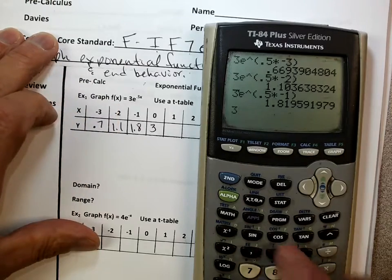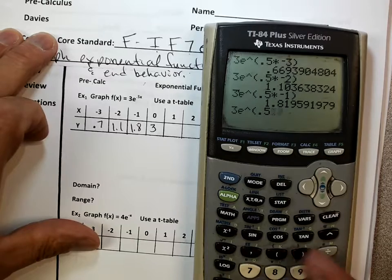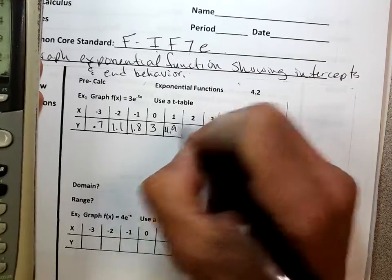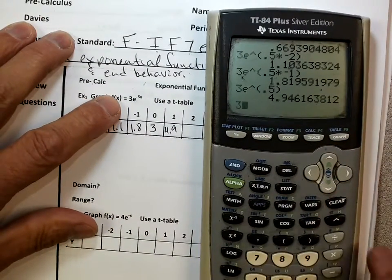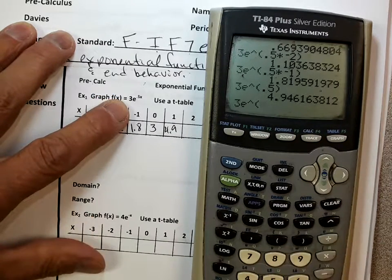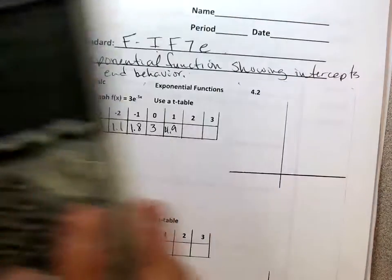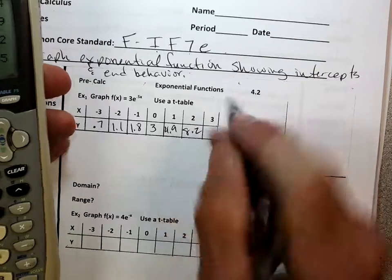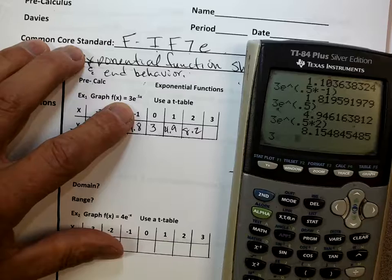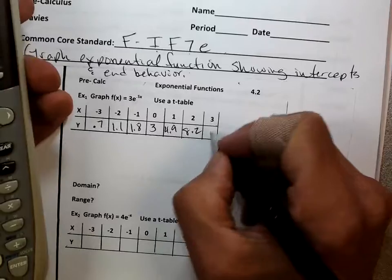I can do that without a calculator because we're pretty smart. 3, and then I'm going to go E to the 0.5 times 1, and I get an answer of about 4.9, it's getting bigger. And then I'll do my 3, E to the 0.5 times 2, I get an answer of about 8.1, maybe 8.2. And then finally I'll throw in the 3, E to the 0.5 times 3, and I get an answer about 13.4.